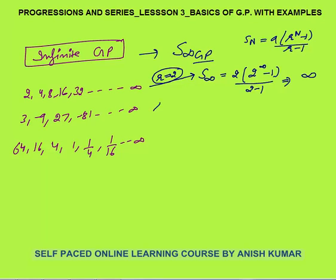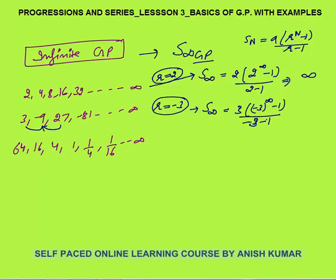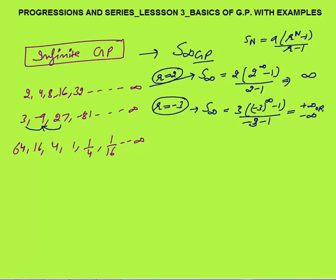For the second GP, the common ratio is −3, because −9/3 = −3 and 27/(−9) = −3. Can we find the sum of infinite terms here? The first term is 3 and R is −3. Plugging in: 3·((−3)^∞ − 1)/(−3 − 1). The answer would be either plus infinity or minus infinity depending on whether the number of terms is even or odd. You cannot determine the answer in this case either.